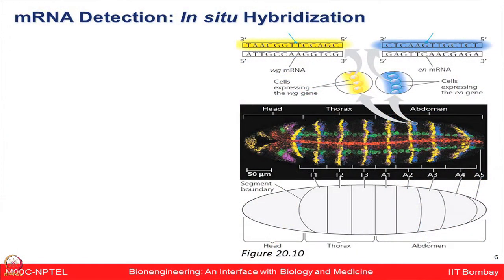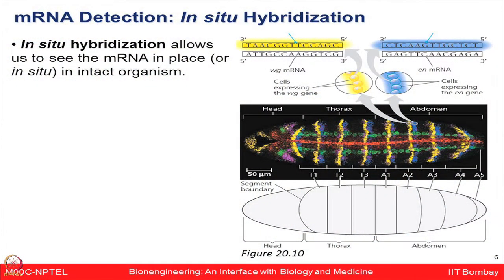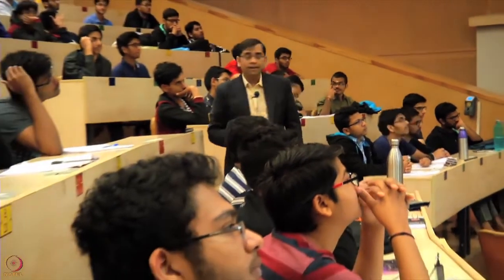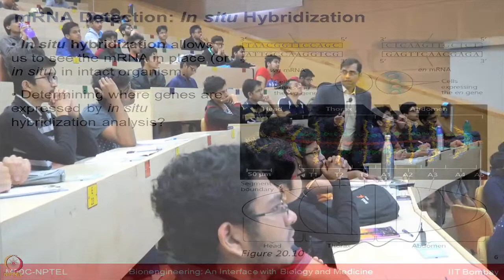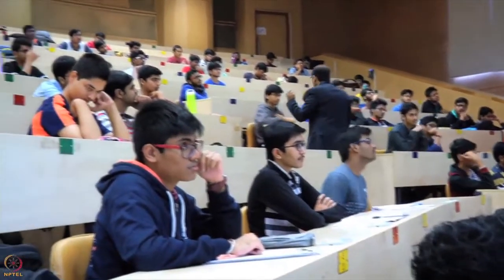Another technique to see in live conditions where a particular RNA is expressed is in situ hybridization. This allows us not only to know whether mRNA is being expressed, but also to see in which cell it is expressed. People have used model systems like Drosophila for these experiments. The interesting colors visible in Drosophila images are actually from different fluorescence patterns used as labels for different types of RNA, with the experiment objective being to determine where genes are expressed by in situ hybridization analysis.